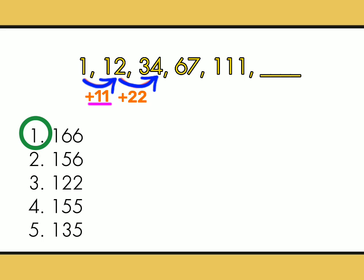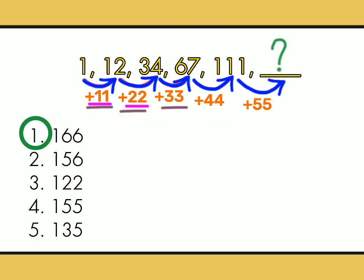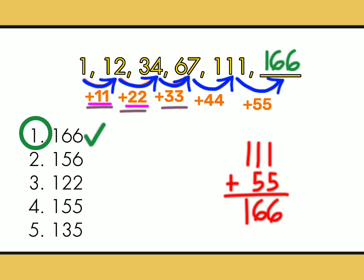Dito ay plus 11, dito naman ay plus 22. Sa itong dalawa pa lang, may nakikita ng pattern. Itry muna natin si 67 at 34 kung susunod ba siya sa pattern. 67 minus 34 is 33, the same as adding 34 and 33, that is equals to 67. Ibig sabihin kung dito ay plus 11 and plus 22 and plus 33, so dito ay plus 44 and here is plus 55. So, ito yung pattern. Since nandito ang blank, diretso na tayo dito. This is 111 plus 55 and that is equals to 166. And that is the answer.